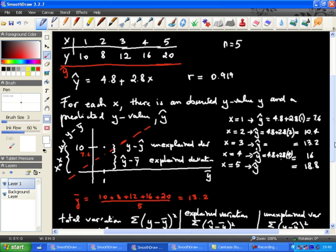So I took simple data. Simpler data for the regression pairs x, y, so 1, 10, 2, 8, 3, 12, 4, 16, and 5, 20. N is equal to 5, and we already did all the calculations for you. So this can be a good practice, I guess.